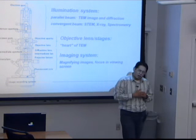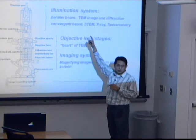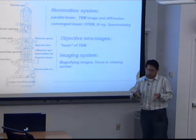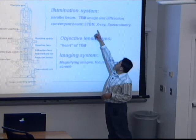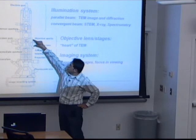In the two main functions of TEM, we use a parallel beam to get TEM images or get the diffraction pattern. You can also use a convergent beam to analyze or measure the composition of the sample, or measure the chemical property of the sample. This is often called STEM, X-ray spectroscopy.